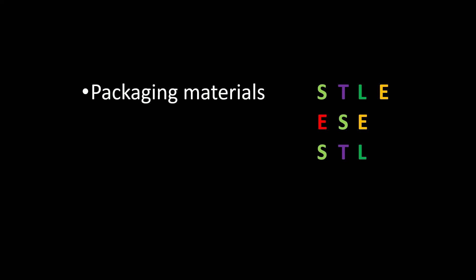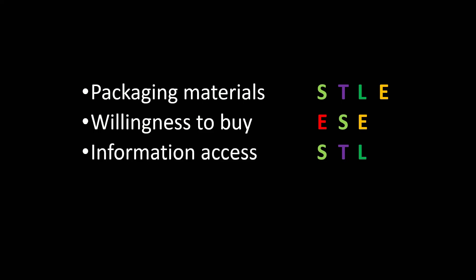You may have already noticed that a number of these factors can fall into multiple categories. Packaging materials could arise in social, technological, legal and environmental. Willingness to buy may be impacted by not just financial capability, but also social trends and environmental concerns — we don't see many shops selling real fur anymore. Information access again could arise in social, technological or legal. This is fine; just ensure that you've considered all of the factors from all of the angles.